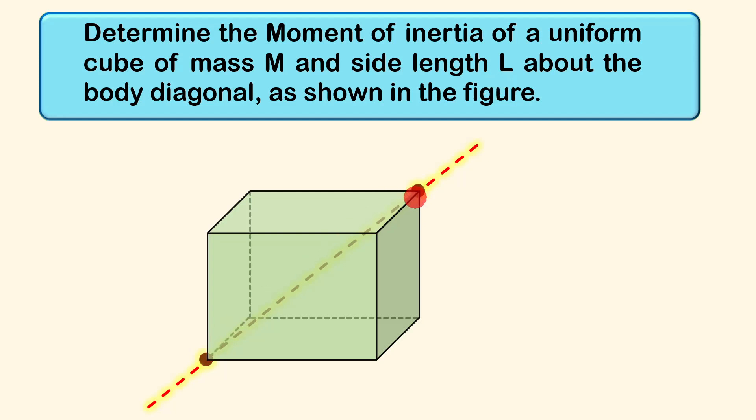Just by looking at this question, if you want to determine this moment of inertia using integration, that would probably prove to be very difficult because visualizing the elements are going to be very difficult in this case. And for the generalized case, when we go to higher studies after class 12th, you will see that moment of inertia is a tensor quantity which will have nine components in the XYZ coordinate system, called IXX, IXY, and so on.